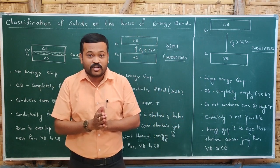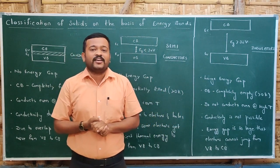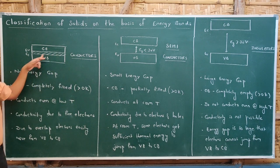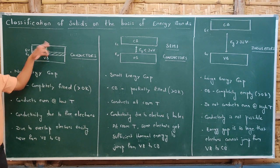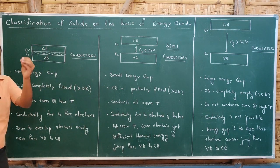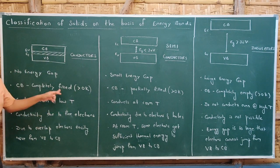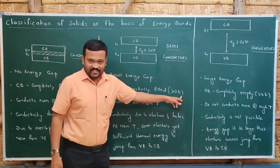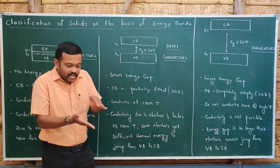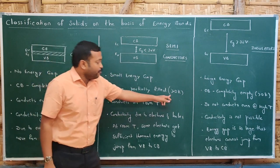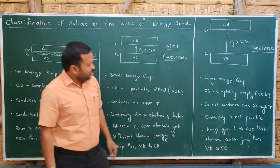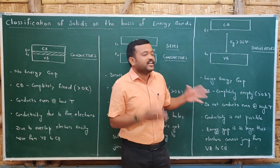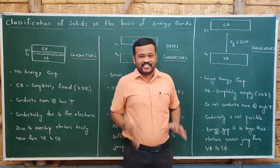The conduction band consists of free electrons. In conductors, the conduction band is completely filled because whatever electrons are present in the valence band move to the conduction band very easily due to overlap — it does not require much energy. In semiconductors, the conduction band is partially filled above 0 Kelvin; as temperature increases, electrons jump from the valence band to the conduction band. In insulators, the conduction band is completely empty because the energy gap is too large and electrons cannot jump from the valence band to the conduction band.